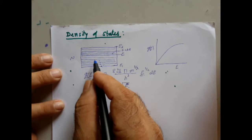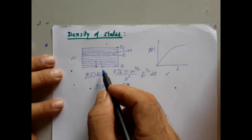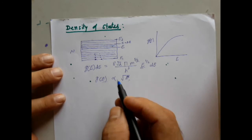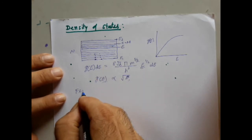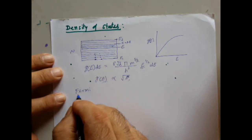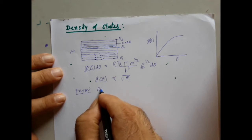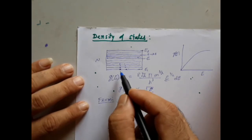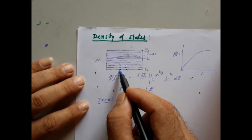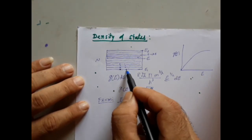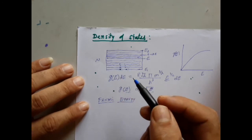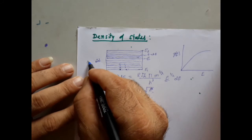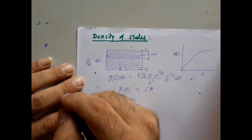Each energy level also contains electrons. The question is how many electrons we can fill in. This was addressed by scientist Enrico Fermi and is called Fermi energy. According to Pauli's exclusion principle, every energy level can occupy a maximum of two electrons, and we have N energy levels, so N/2 energy levels are occupied.